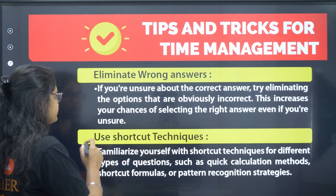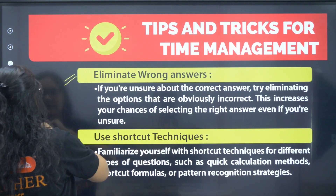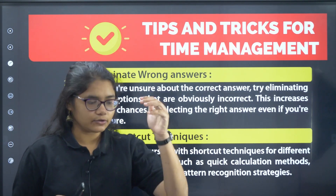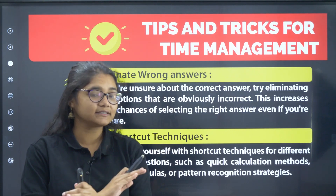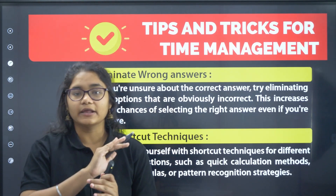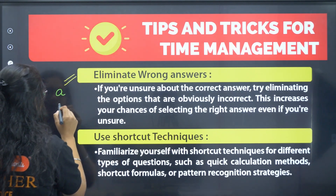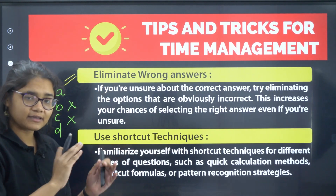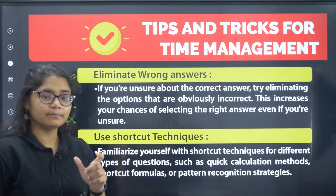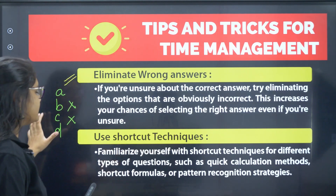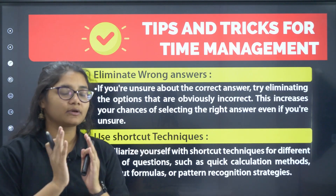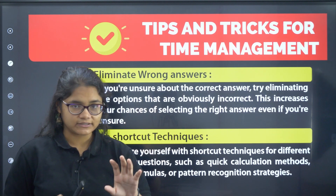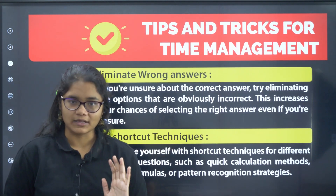The third tip is to eliminate wrong answers. Whenever we have more choices, we get more confused. If you read a question and don't know the answer, find out which options cannot be the answer. Suppose you have four options A, B, C, D and you determine B and C cannot be correct — now your thought process becomes simpler between A and D, and you can recollect concepts more easily. Whenever you find difficulty, try to eliminate options that cannot be the answer.